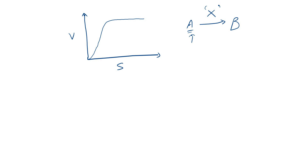Once the substrate concentration reaches its maximum level, all of the enzyme becomes occupied by the substrate. This is the point where the speed of the reaction is maximum, and this point is indicated as Vmax — the maximum speed of the reaction.